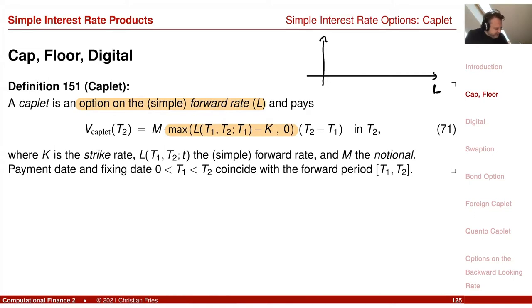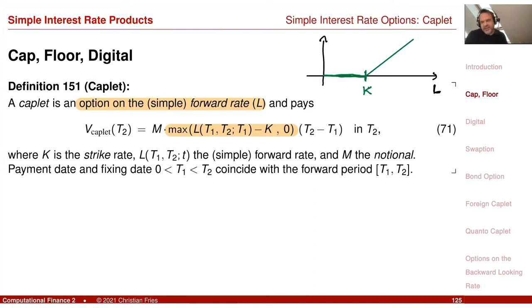Actually it's like a forward rate agreement. The payoff observed is zero if the interest rate is below K, and then we pay a linear function starting at K — we pay L minus K. K is called the strike rate, and M is the notional in the currency that belongs to the interest rate L.